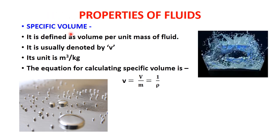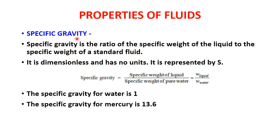Next is specific volume. This property of fluid is always regarded as the reciprocal of density. It is defined as volume per unit mass of liquid, denoted by small v, and its unit is m³/kg. The equation is v = V/m = 1/rho, so specific volume can directly be calculated as 1 divided by rho.